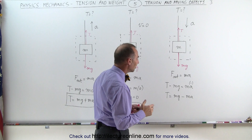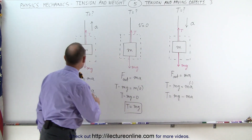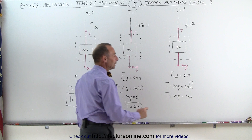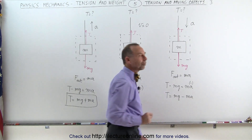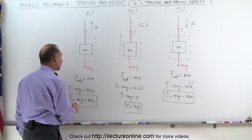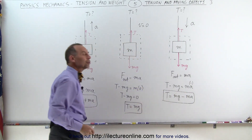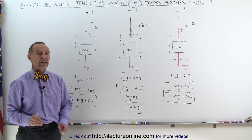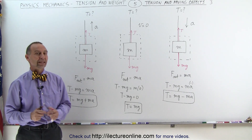So we can see: if the object is accelerating downward, the tension is less than the weight; if it's accelerating upward, the tension is greater than the weight by the quantity ma; and if acceleration is negative, we subtract ma from the weight to get the tension. In the next video, we'll do a more systematic explanation using forces and directions with proper sign conventions and free body diagrams.